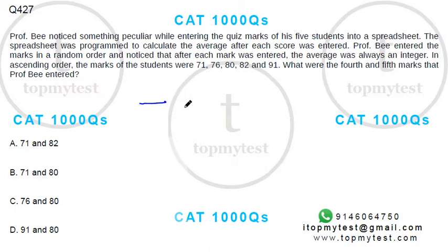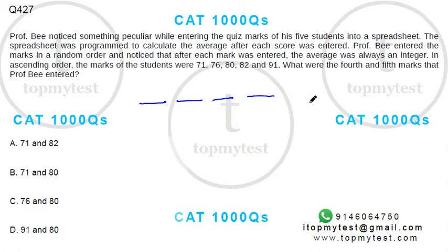You enter the second mark, it gives you the average of those two marks. If you enter the third mark, it gives you the average of those three marks. Then the fourth mark gives you the average of four, and the fifth gives you the average of all five.